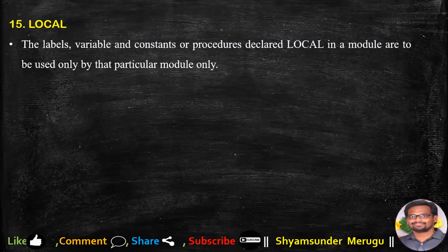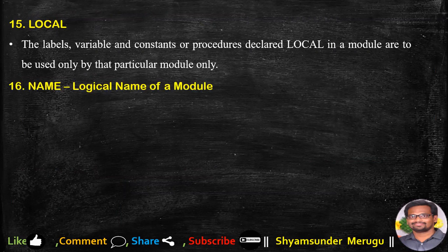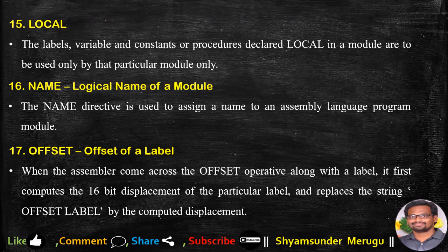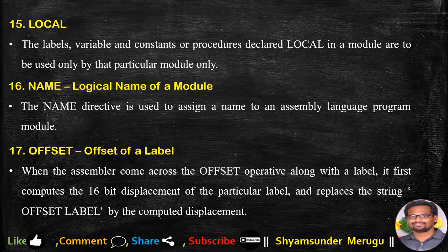LOCAL — labels, variables, constants, or procedures declared local in a module are to be used only by that particular module. NAME stands for the logical name of a module. The NAME directive is used to assign a name to an assembly language program module. OFFSET — when the assembler encounters the OFFSET operator with a label, it computes the 16-bit displacement of that label and replaces the string 'OFFSET label' with the computed displacement.